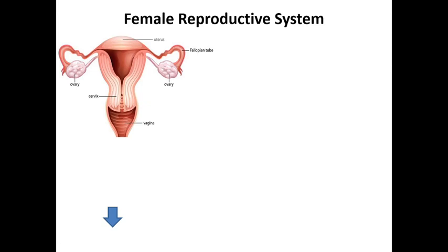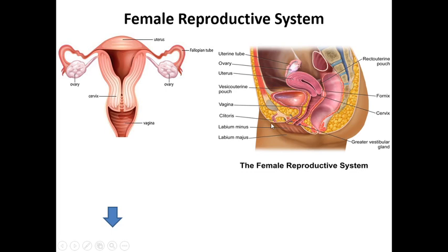When you consider the reproductive system in females, it consists of the two ovaries, the fallopian tubes, the uterus, the uterine cervix, and then the vagina. Now look at this picture — this is a section of the abdomen or pelvic organ showing the female genital system. You can see the ovaries, fallopian tubes, uterus, uterine cervix, and vagina. In front of the female genital system you can see the urinary bladder and the urethra, and behind the uterus you have the rectum, anal canal, and anus.